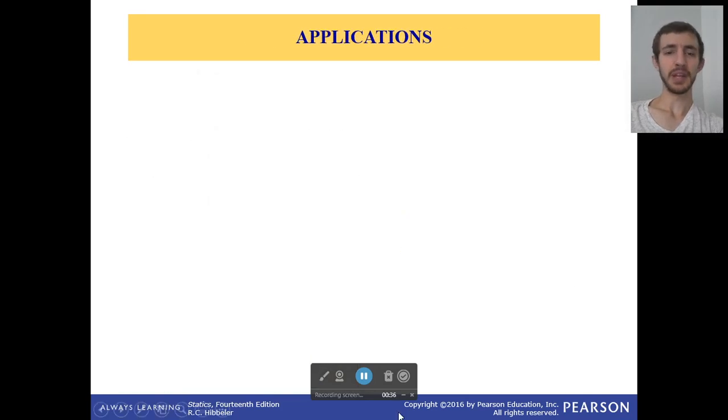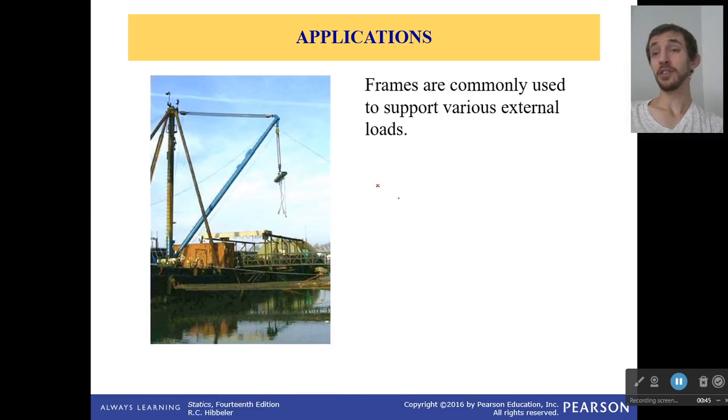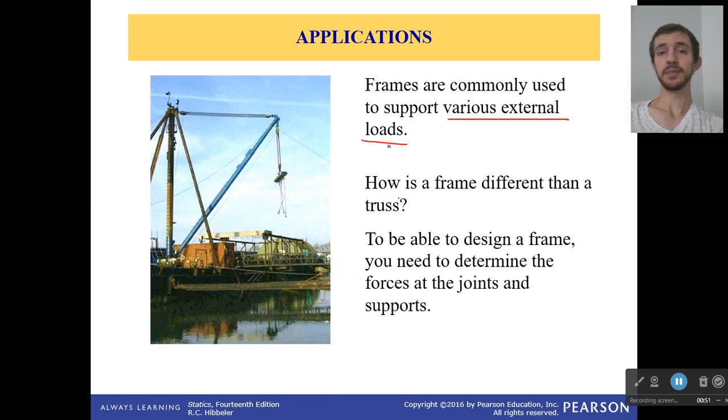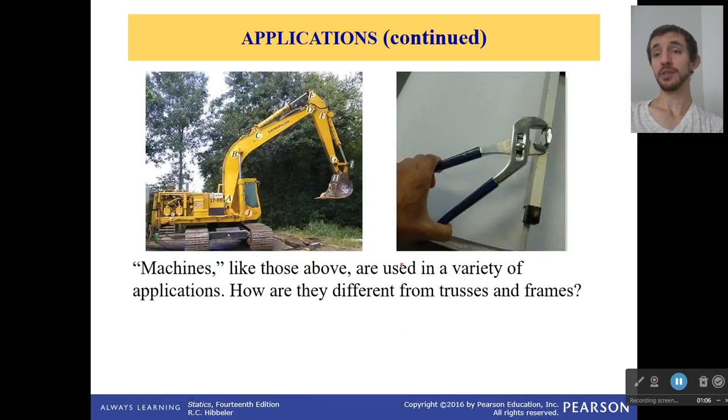So let's keep moving on. First off, frames—we use them to support stuff. Various external loads are being supported. Now how is a frame different than a truss? Well, to design a frame, you need to be able to determine the forces at the joints and supports. Another thing we're going to see is that a frame can have multiple force members. So not just two-force where it goes out the ends, but three-force members where it has some force that's going perpendicular or at an angle to one of the members. It doesn't happen in a truss, it happens in frames.